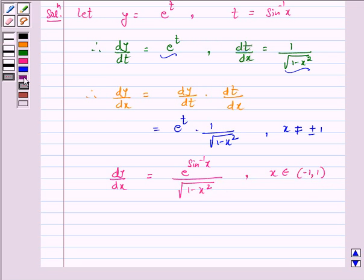Hence the answer for the above question is e raised to power sine inverse x over the square root of 1 minus x squared, where x belongs to the open interval minus 1 to 1.